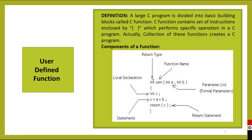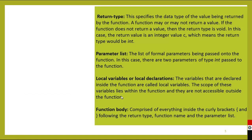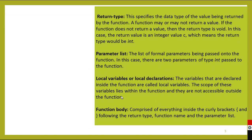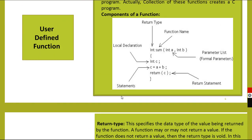The function return type is int, so the function returns an integer value — 'return c'. Return types specify the data type of the value being returned by the function. A function may or may not return a value. If the function does not return a value, then the return type is void. In this case the return value is an integer value c, which means the return type would be int.